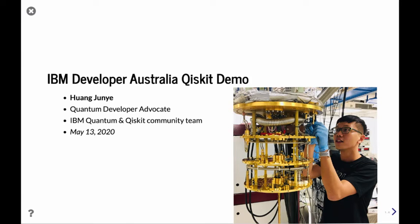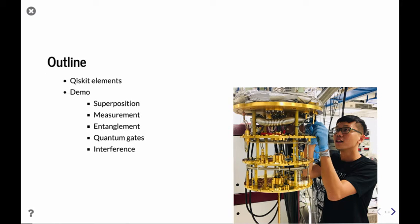For today's presentation, I'll first give you a little introduction of the different elements of Qiskit — our Quantum Information Science Development Kit to run programs on quantum computers. The second part will be a demo using the IBM Quantum Experience as well as code using Qiskit of all the concepts that Craig just covered: superposition, measurement, entanglement, and some quantum gates. At the end, I will demonstrate using a Grover's algorithm to show you the power of quantum computing, using interference in combination with superposition, measurement, and entanglement.